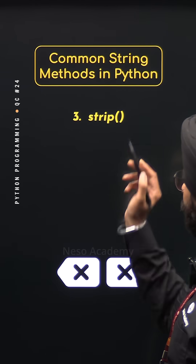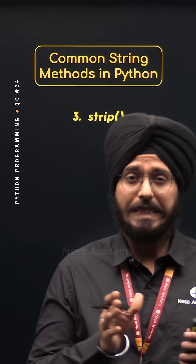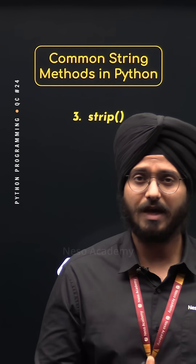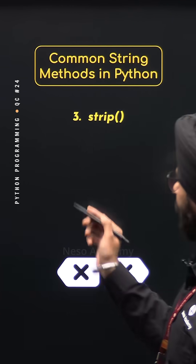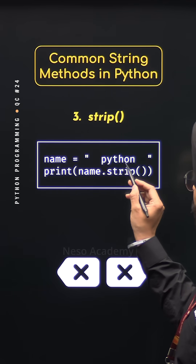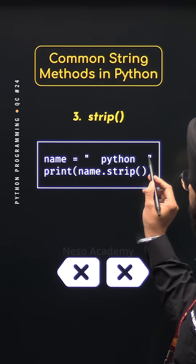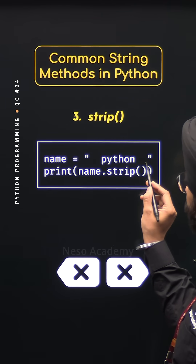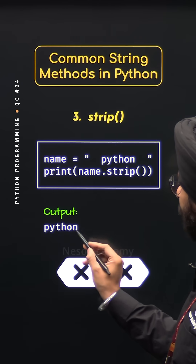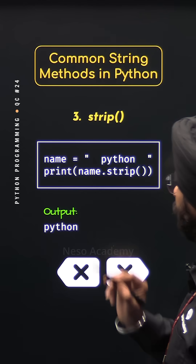3. Strip method: The strip method is used to remove all the leading and trailing whitespace characters from a string. For example, the name variable is pointing to a string with some leading and trailing whitespace characters. Name.strip will result in 'python' without leading and trailing whitespace characters.